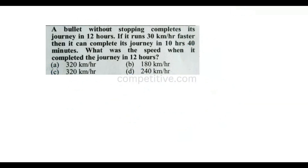Let speed = x. At x plus 30 km/h faster, the time is 10 hours 40 minutes. 40 minutes divided gives us the fractional hours. At x, time is 12 hours, so distance = x into 12 kilometers.